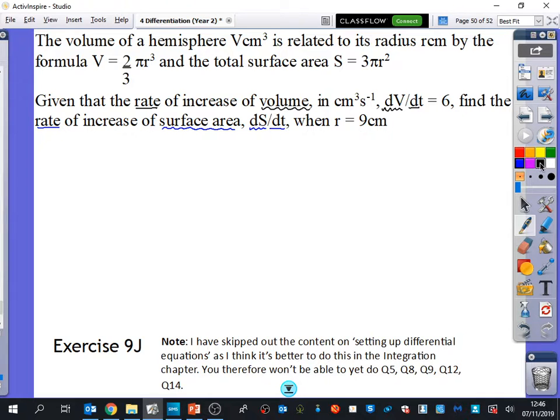So let's just go through some of the pieces of information they've given us that we can write down. We know that volume is 2 over 3 pi r cubed. We also know that the surface area is 3 pi r squared, and they have also told us that dV by dt is equal to 6. We are trying to find out what dS/dt is, and we're going to do that when r is equal to 9. So I've got all of my different pieces of information at the top.